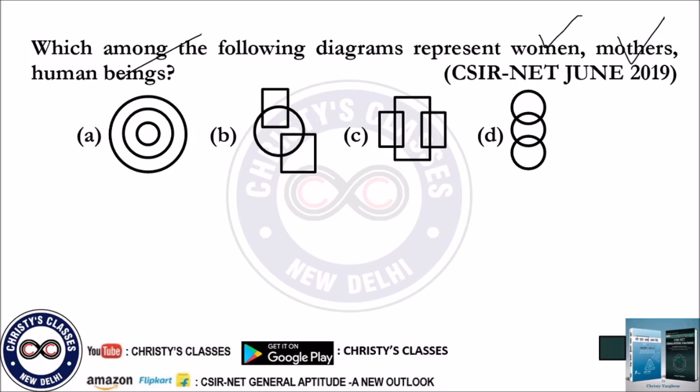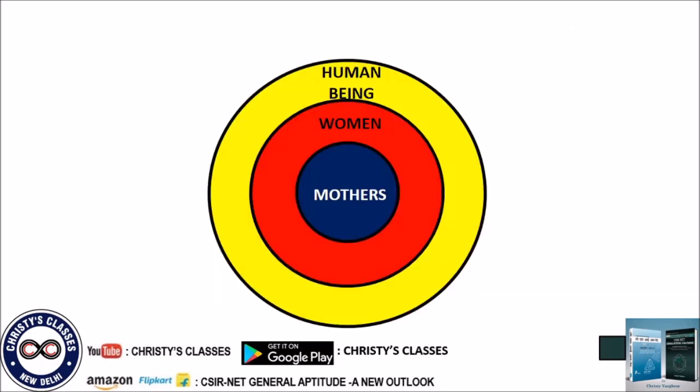Among the four options, option A is satisfying. Look at option A — the smallest circle is the mother set, which is inside the woman set, and that woman set is a subset of the human being set. As both conditions are satisfied here, option A is definitely the answer.